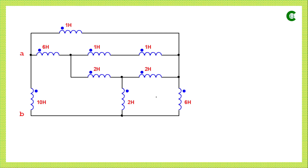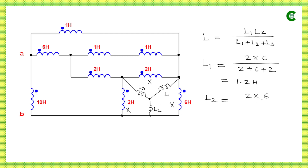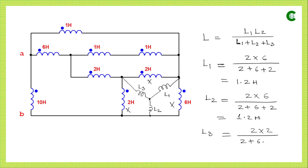For this circuit we will target this delta connection and convert it to the corresponding star connection. After conversion, the inductors in the delta connection will vanish and instead we will have the star connection with L1, L2, L3 inductors as part of the circuit. Using the delta-to-star formula: L1 will be 1.2 Henry after simplification. Similarly, L2 = (2 × 6) divided by the sum of all three inductors = 1.2 Henry. For L3, the numerator is 2 × 2 divided by the same denominator = 0.4 Henry.